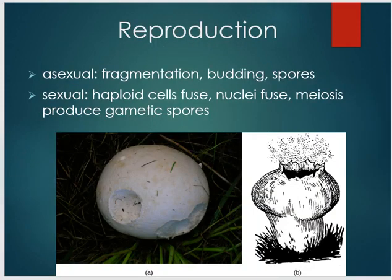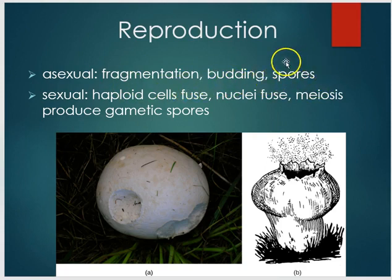For reproduction, some fungi reproduce asexually, some reproduce sexually, and some are able to do both. We refer to fungi that can reproduce both asexually and sexually as being perfect fungi. Imperfect fungi can only reproduce asexually. If they're reproducing asexually, they are doing so through fragmentation, budding, or release of spores.